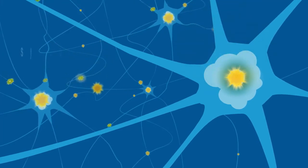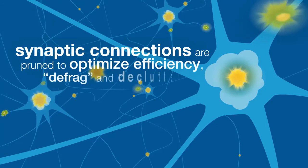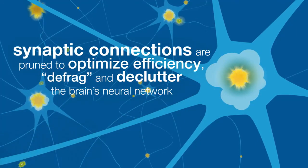During sleep, synaptic connections are pruned to optimize efficiency, defrag, and declutter the brain's neural network, creating greater neuroplasticity.